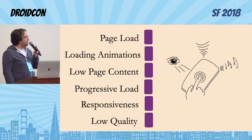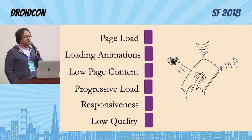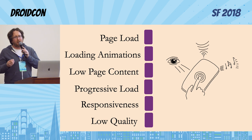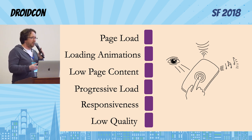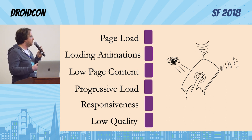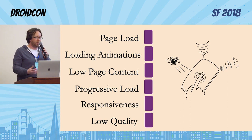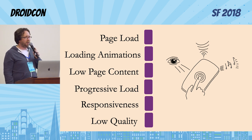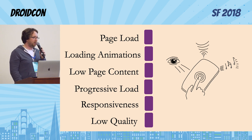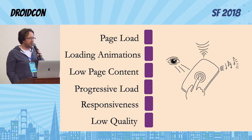The fifth one we call responsiveness. Typically it's good practice, and a lot of design guidelines suggest, that when the user taps on something or interacts with the screen there should be some visual response. Usually if there's not a visual response, that's a sign of a problem. Also, if the visual response is too long, that's also a sign of a problem — potentially just a bad experience, like too many animations or something.